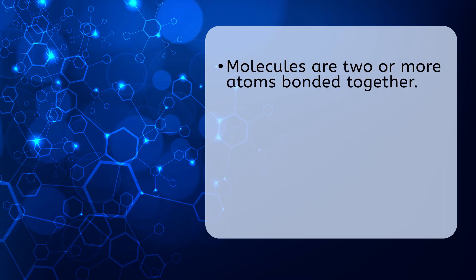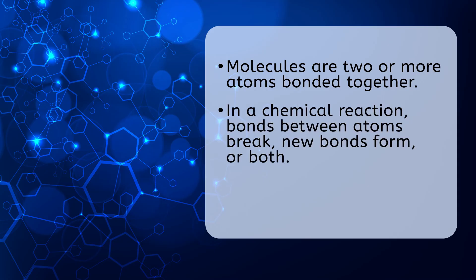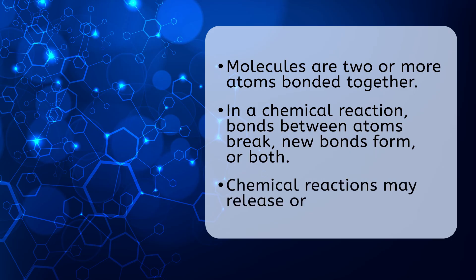So why don't we look like the food we eat? Because chemical reactions in our bodies turn food molecules into new molecules. Life would not be possible without the chemical reactions which rearrange atoms, absorb energy, and release energy in living things. We now know that molecules are groups of two or more atoms bonded together; that in a chemical reaction, bonds between atoms break, new bonds form, or both; and that chemical reactions may release or absorb energy. Next time, we'll take a closer look at a very important molecule which is necessary for life to survive. Until then, remember: biology is more than just science — it's the way of life.